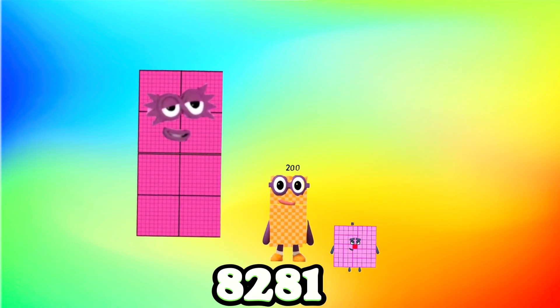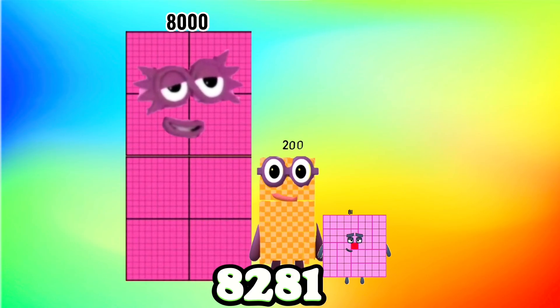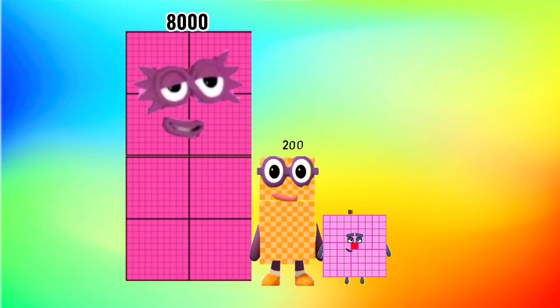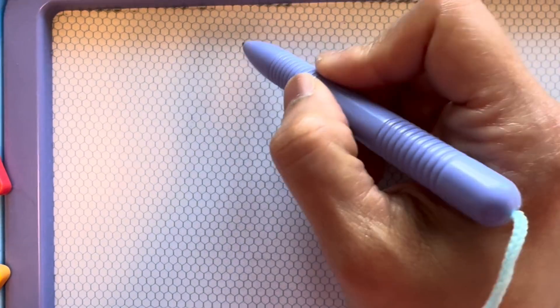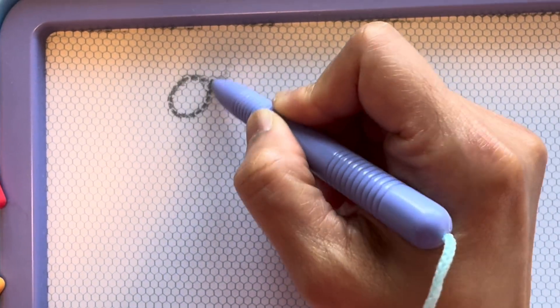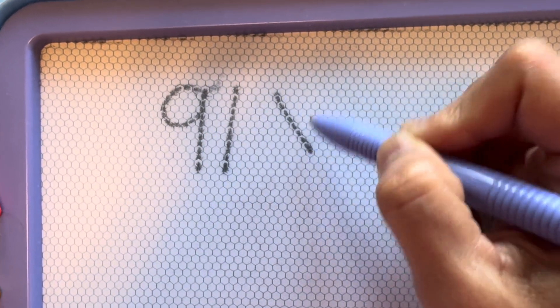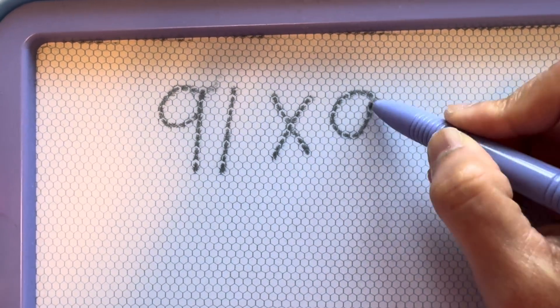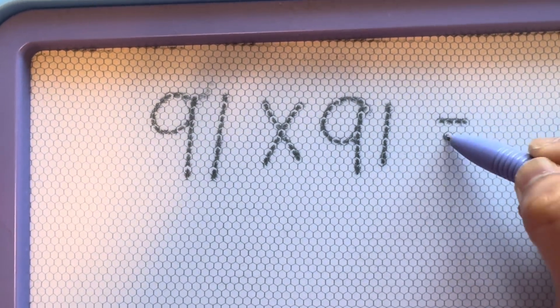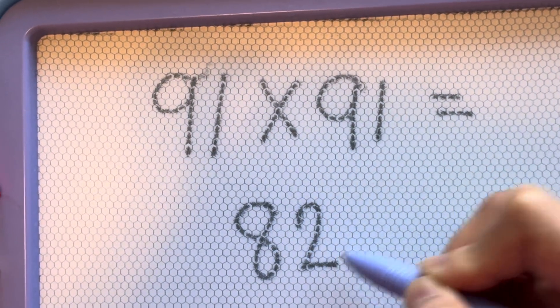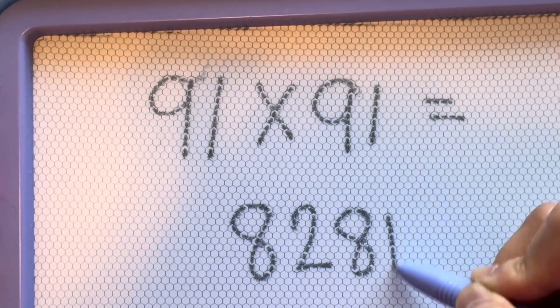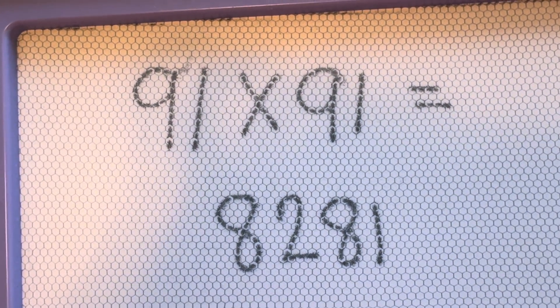8,281. 91 multiplied by 91 is equals to 8,281.